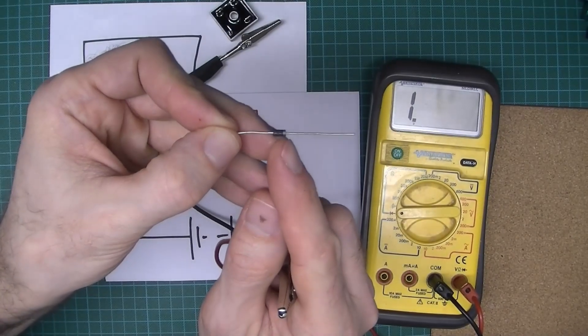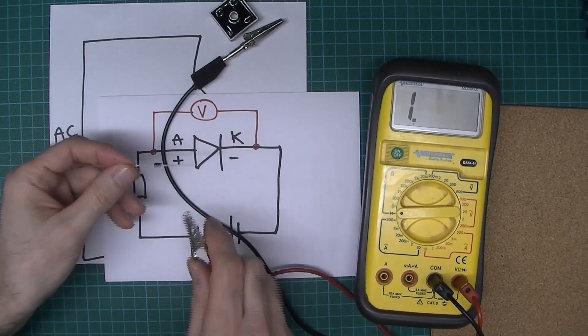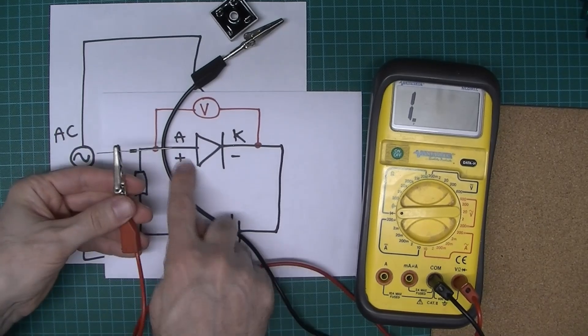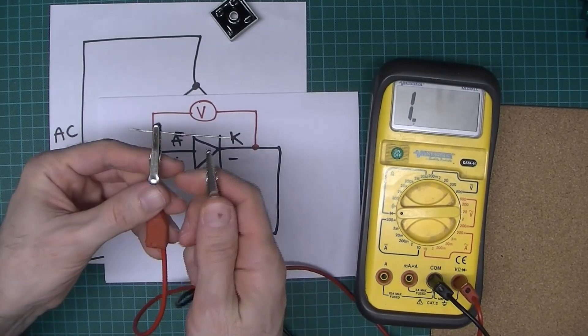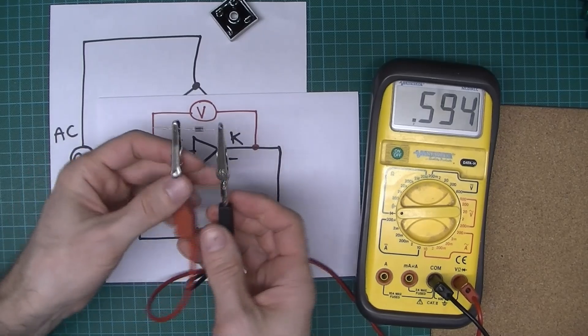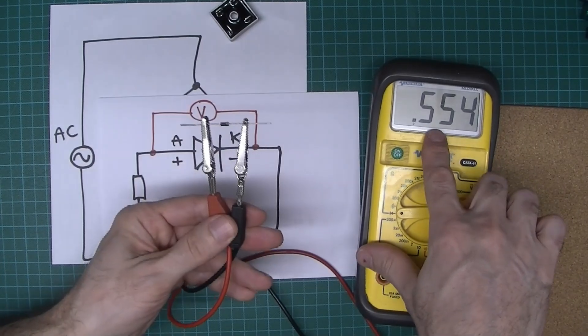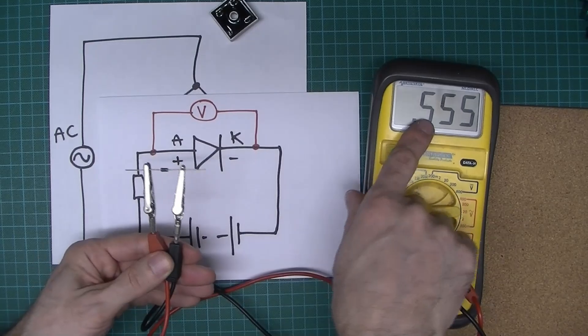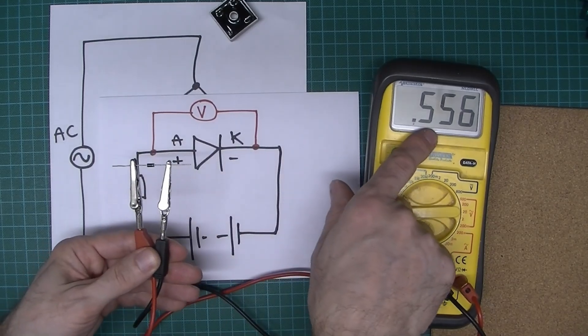The gray stripe, remember, is the cathode, so let's have the positive side on this way like that. And as you can see, that diode appears to be good. We've got the expected, or within the expected range when it's forward biased.